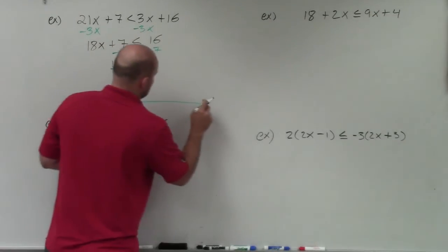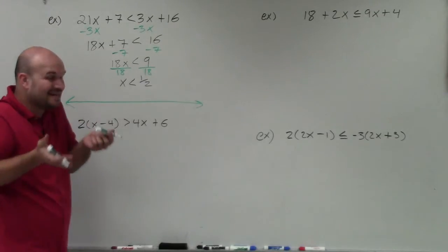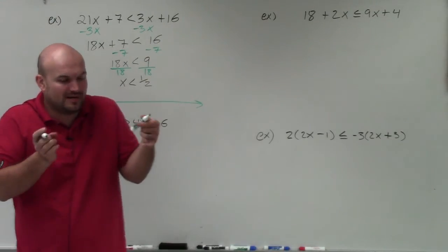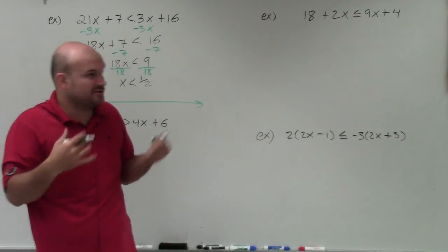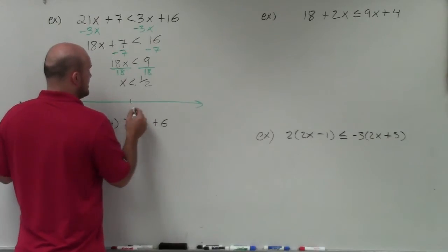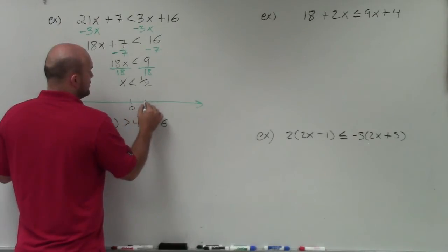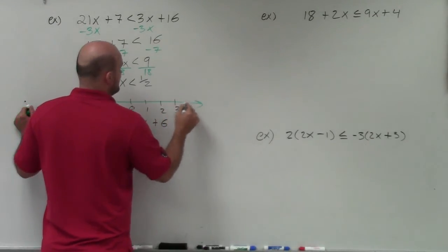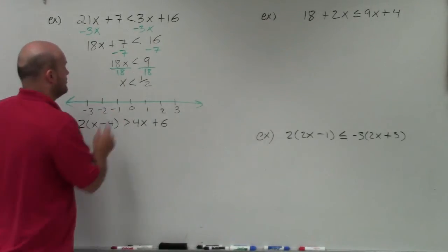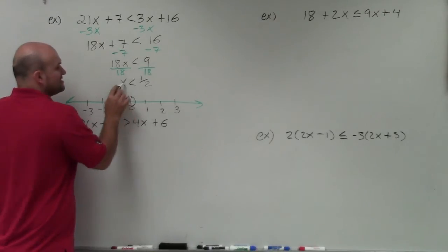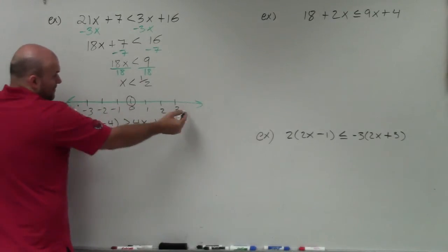Now to go ahead and graph this, I'm going to use a number line. 1 half is not an integer, so usually when we're doing our number line we use integers. I'm going to start at integers close to 1 half — 0, 1, 2, 3, and to the left negative 1, negative 2, negative 3. We make a nice big circle at 1 half. Since it's x is less than 1 half, that's going to be open. 1 half is right between 0 and 1, and then we represent all the points that are less than 1 half, which is to the left, with an arrow saying all those values are true.